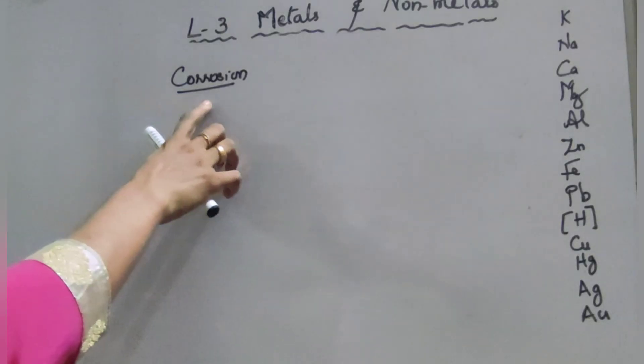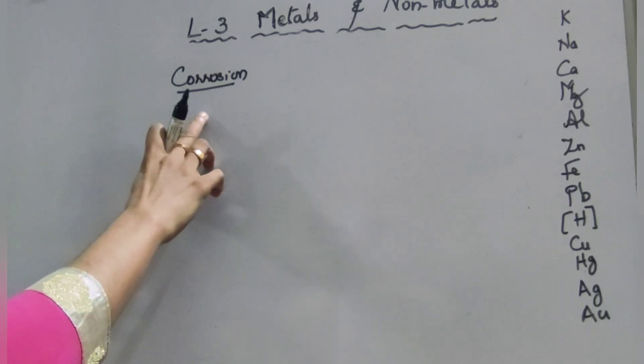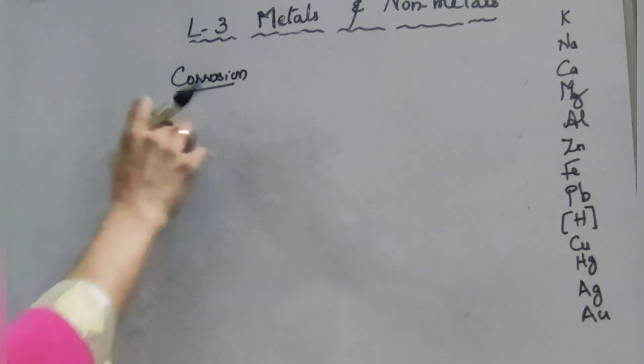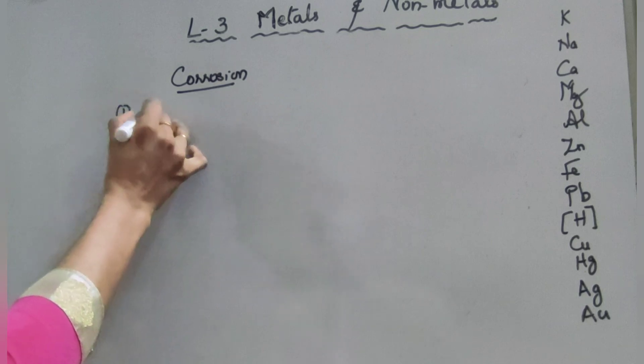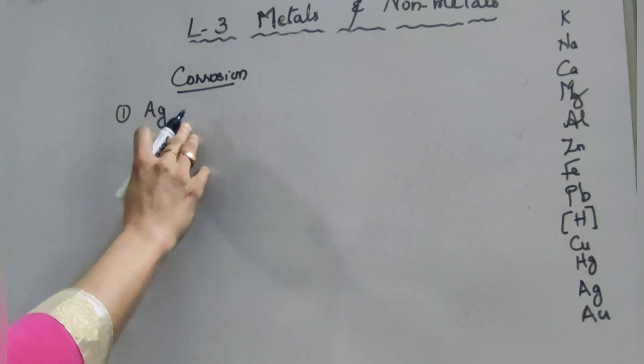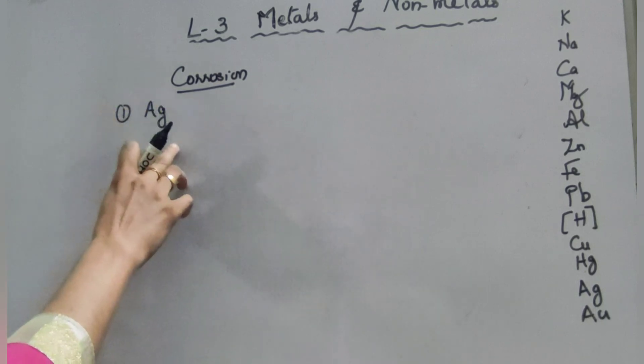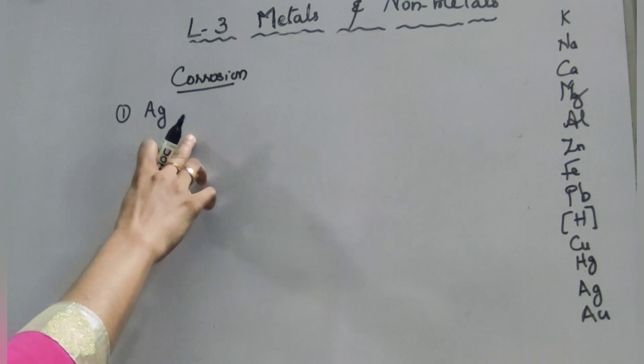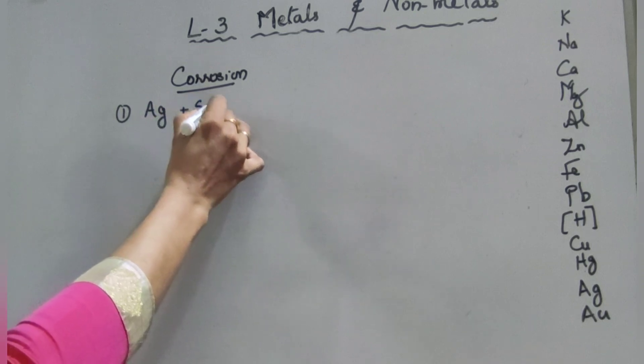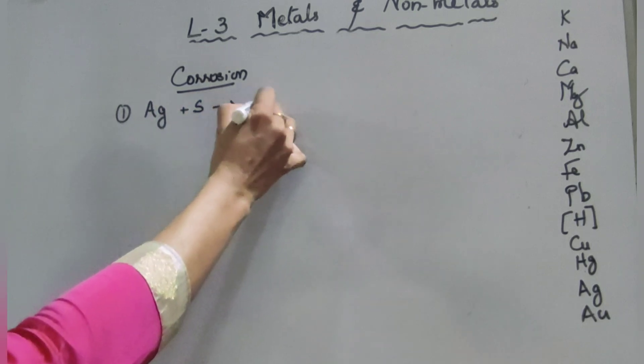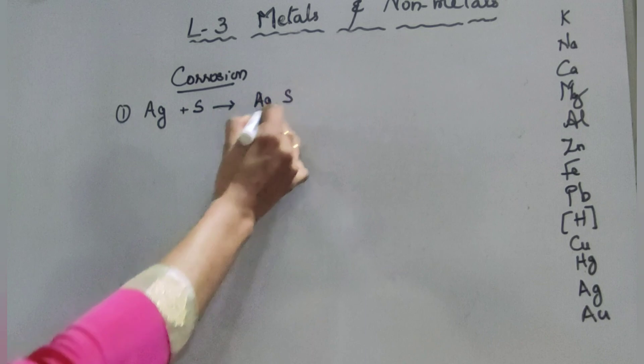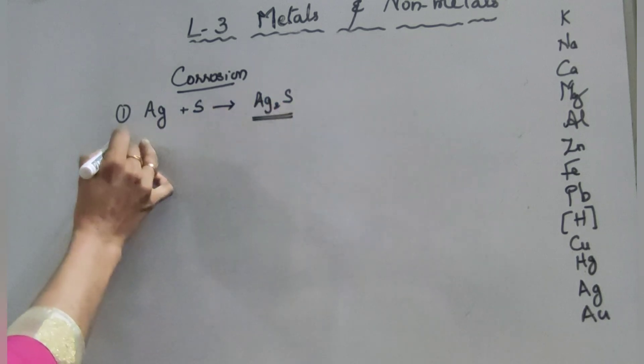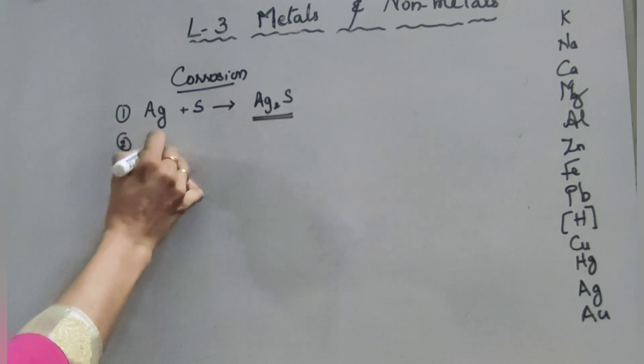Next topic: corrosion. We have learned the following about corrosion in chapter one. In the first case, look at the case of silver. Silver articles become black after some time when exposed to air. Why? This is because it reacts with sulfur in the air to form silver sulfide. This is another type of corrosion. Second case: copper.